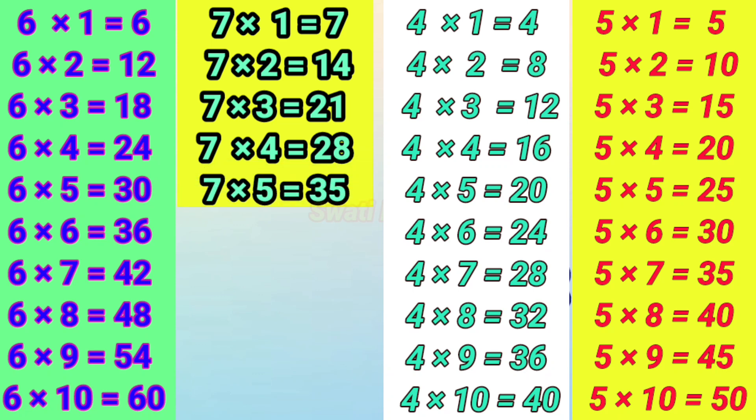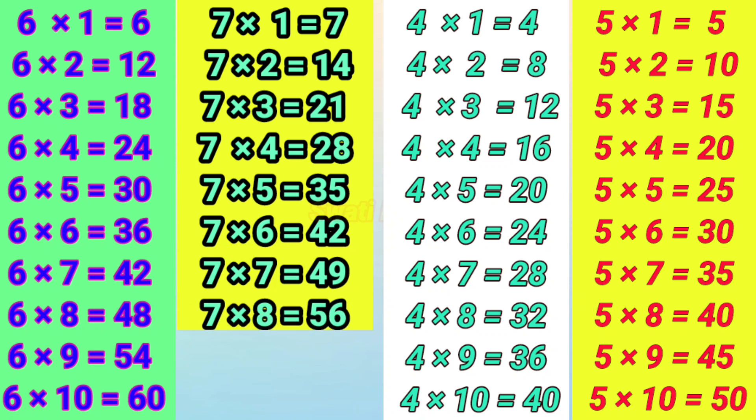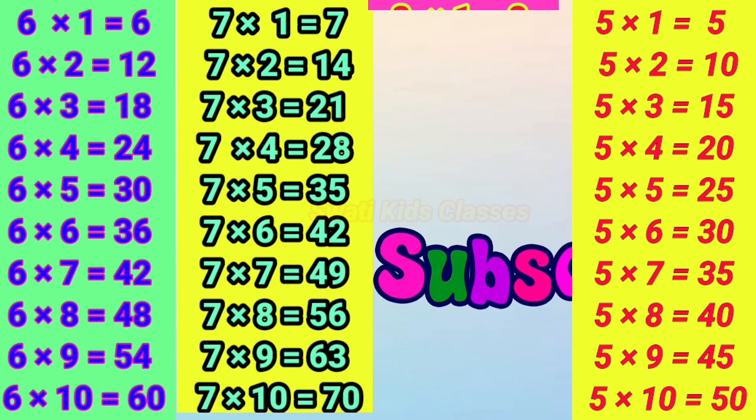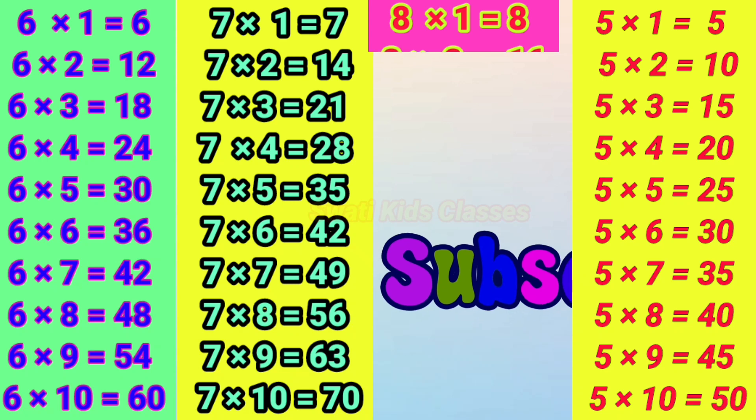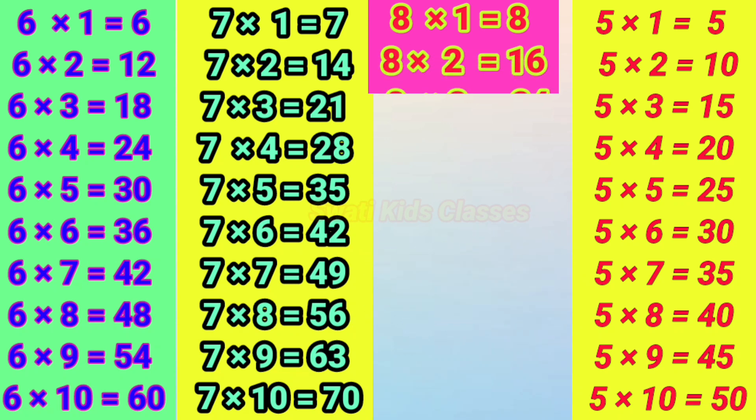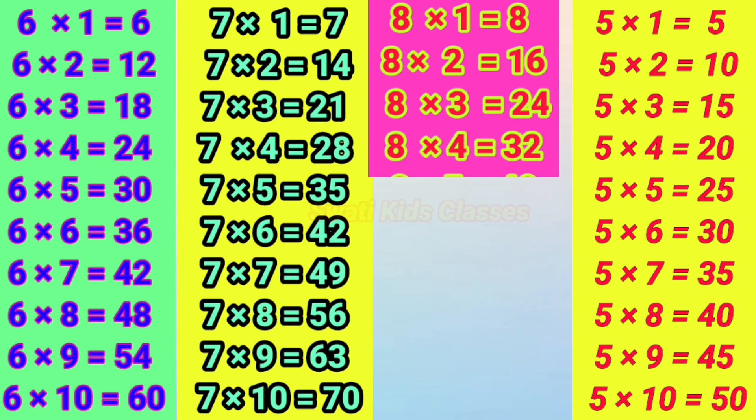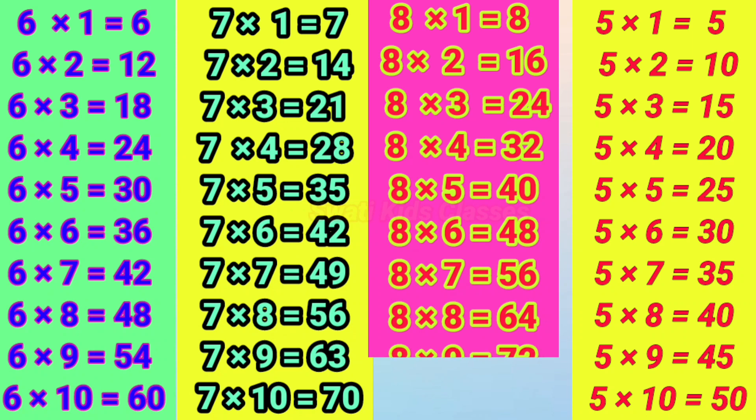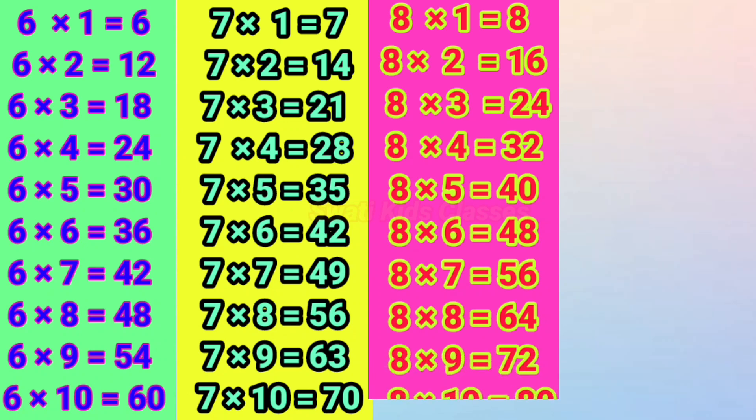7×5=35, 7×6=42, 7×7=49, 7×8=56, 7×9=63, 7×10=70. 8×1=8, 8×2=16, 8×3=24, 8×4=32, 8×5=40, 8×6=48, 8×7=56, 8×8=64, 8×9=72, 8×10=80.